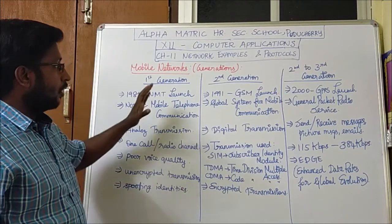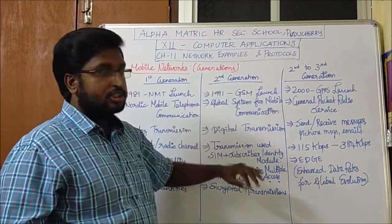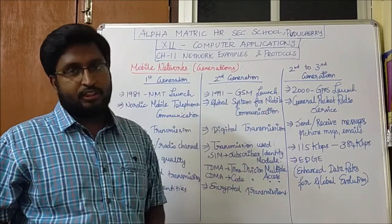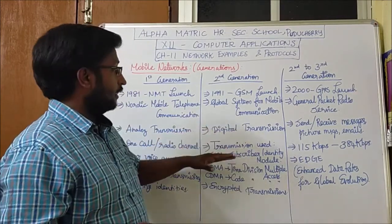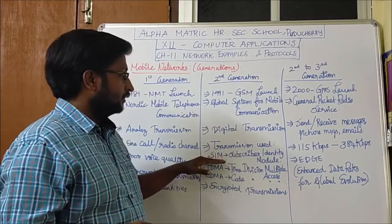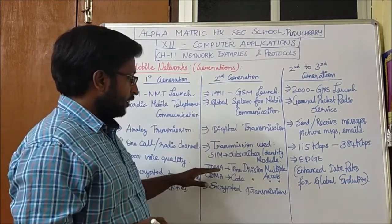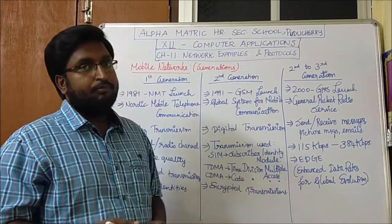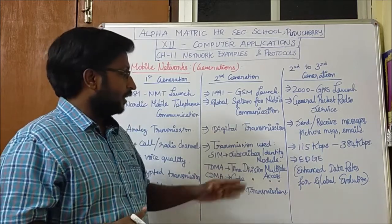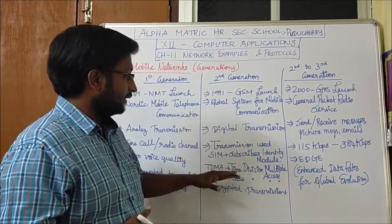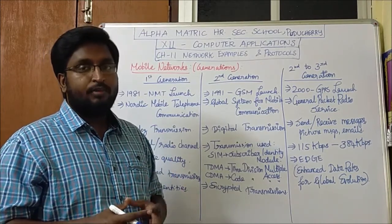To overcome these disadvantages, the second generation was developed in 1991 with the GSM launch — Global System for Mobile Communication. It uses digital transmission and introduced the SIM (Subscriber Identity Module) for specific identity per subscriber, TDMA (Time Division Multiple Access), and CDMA (Code Division Multiple Access). The transmission was fully encrypted, so no illegal access or misuse could occur.